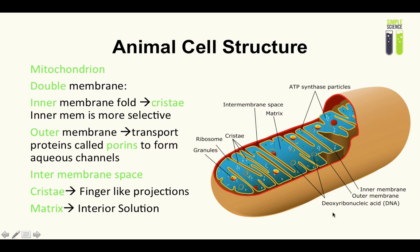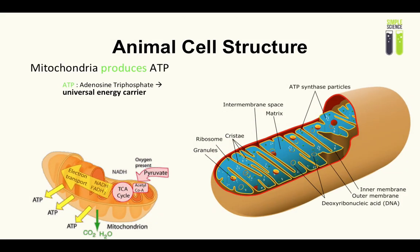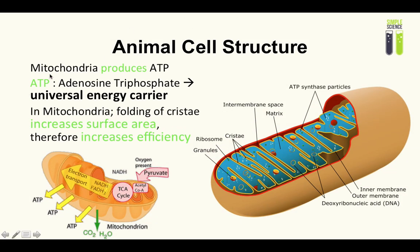The mitochondrion has its own DNA and its own ribosomes, which will lead us to a theory in a moment. In summary, mitochondria produce ATP — adenosine triphosphate — which is known as a universal energy carrier. The folding of the cristae increases surface area and therefore increases efficiency.